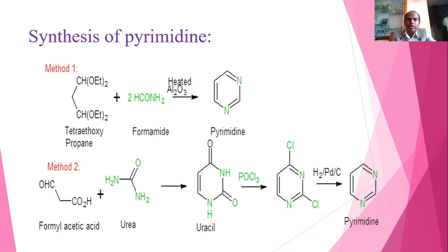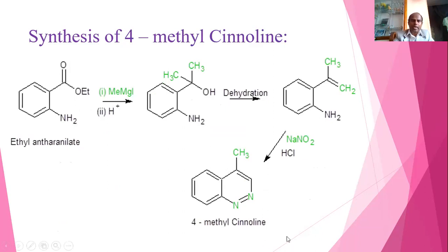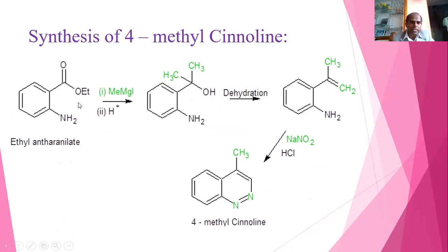The synthesis of 4-methyl cinnoline starts with ethyl anthranilate (the ethyl ester of anthranilic acid), which reacts with a Grignard reagent to form a tertiary alcohol. This undergoes dehydration to form an alkene, which then undergoes diazotization — converting NH2 to N2Cl. The N2Cl reacts intramolecularly to form the cyclic product 4-methyl cinnoline.